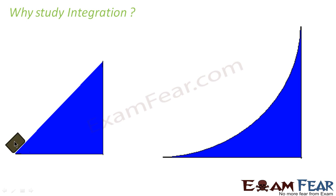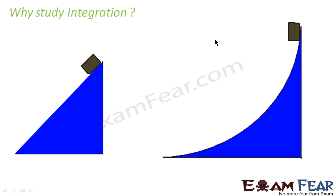In the first case, you have to take this wooden block from here to the top — you can just slide it. Finding the work done required is very easy because at any point of time, since the area is not curved, it is very easy to find. At any point, the total force required is almost constant. Why? Because the angle is constant — this is the force you are applying, this is the frictional force — so the force is always constant.